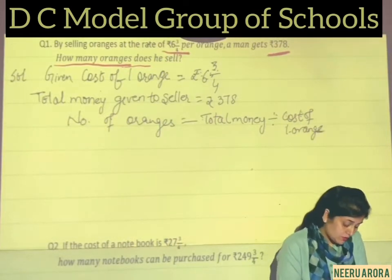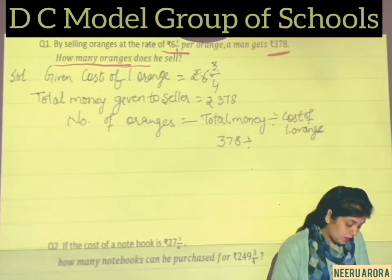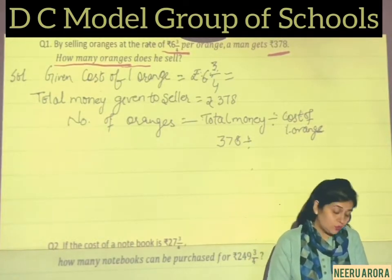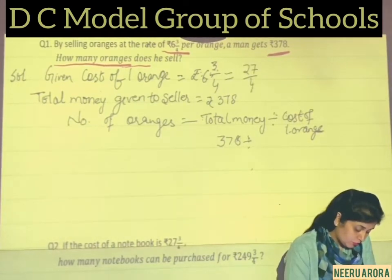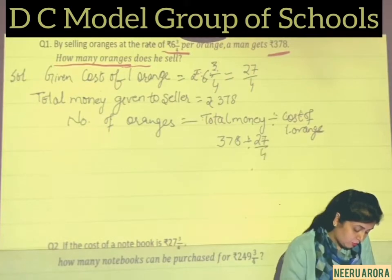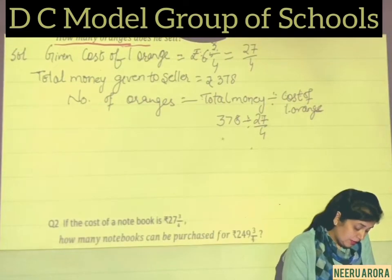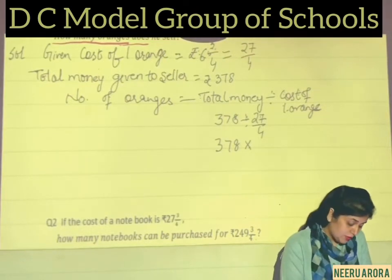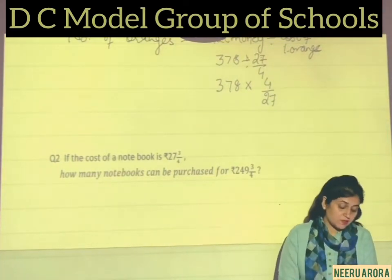So total money divided by cost of 1 orange gives the number of oranges. Total money is Rs. 378 divided by the cost of 1 orange. The cost 6 3/4 is a mixed fraction, so first we convert it into an improper fraction: 6 × 4 = 24, plus 3 = 27/4. So we divide 378 by 27/4. The rule says the first fraction should be multiplied by the reciprocal of the second fraction, which is 4/27.